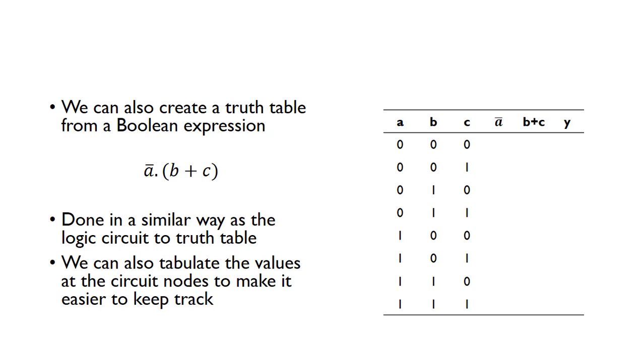It's easier if you tabulate the values of the circuit nodes. We know this expression contains a NOT A term, so in the truth table here, as well as having the output Y, we've also got a column to keep track of NOT A and one also for B OR C.